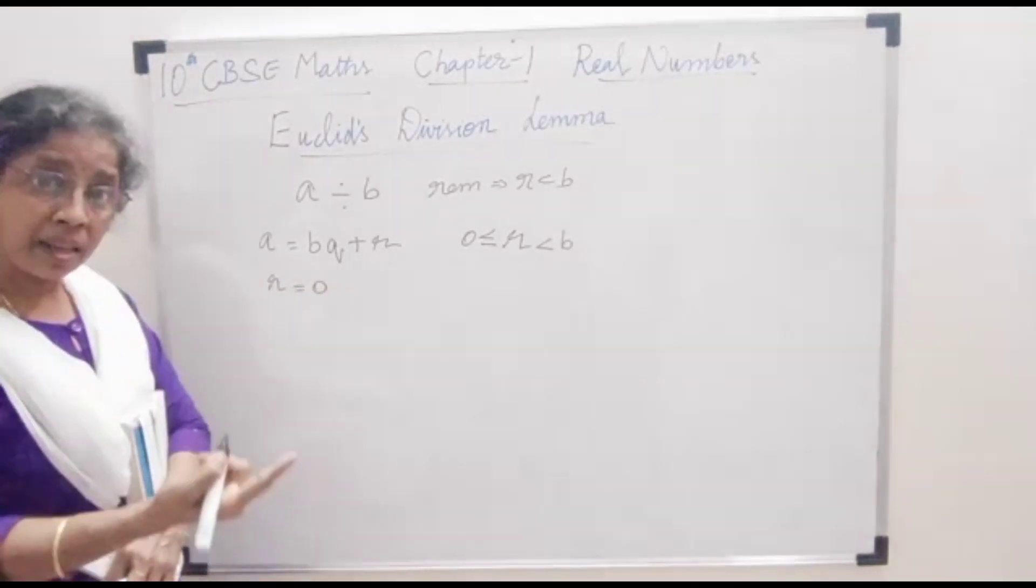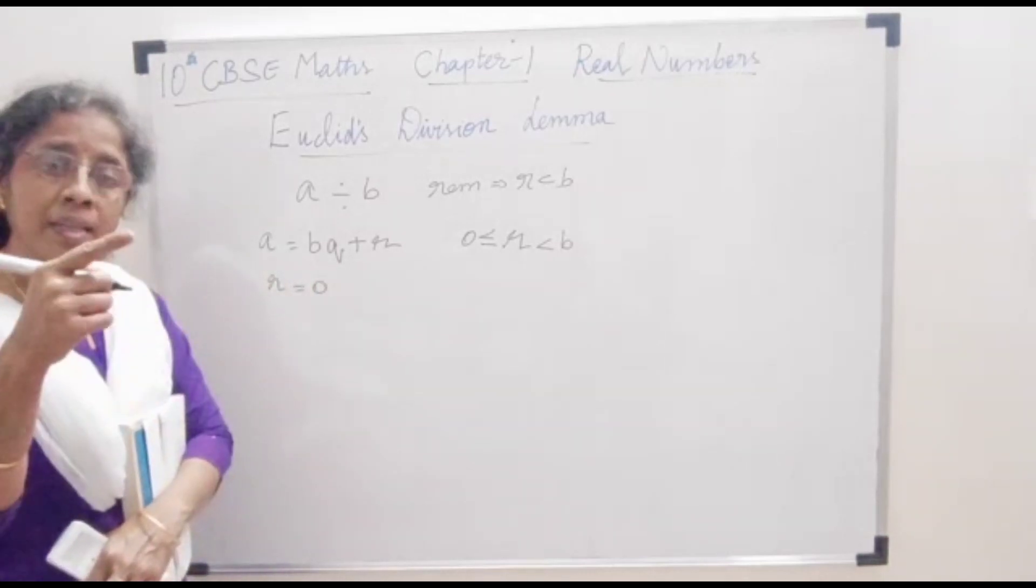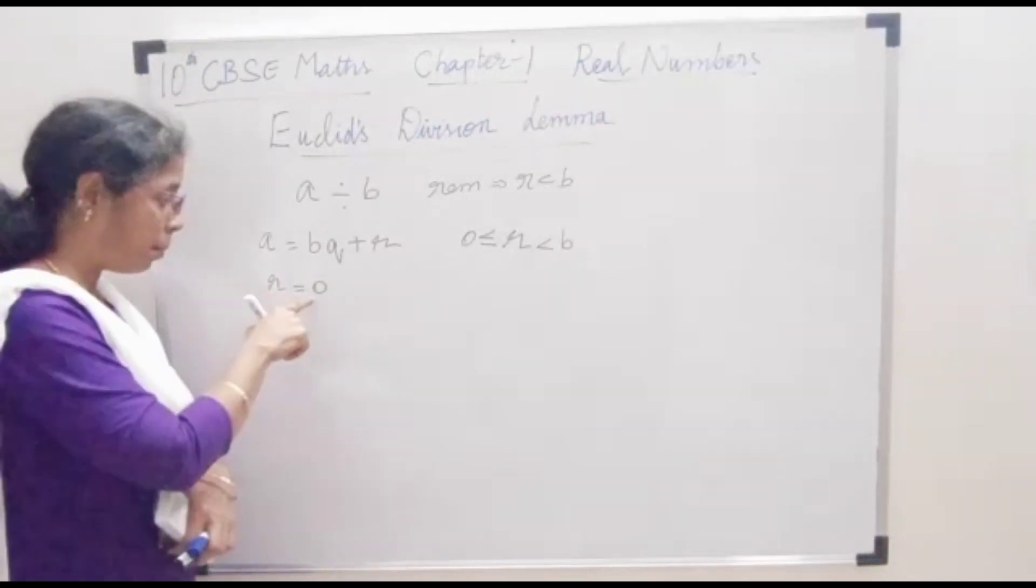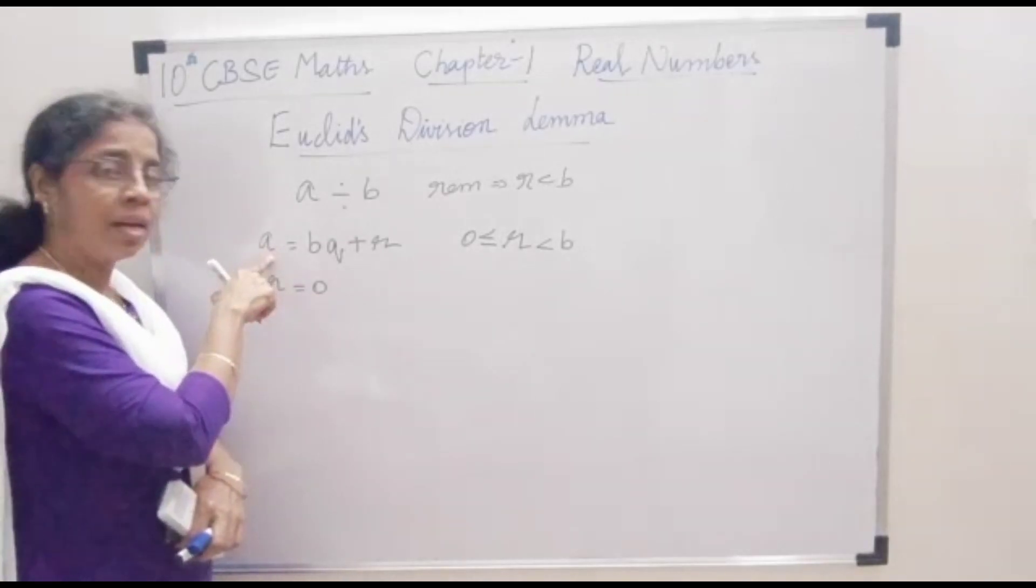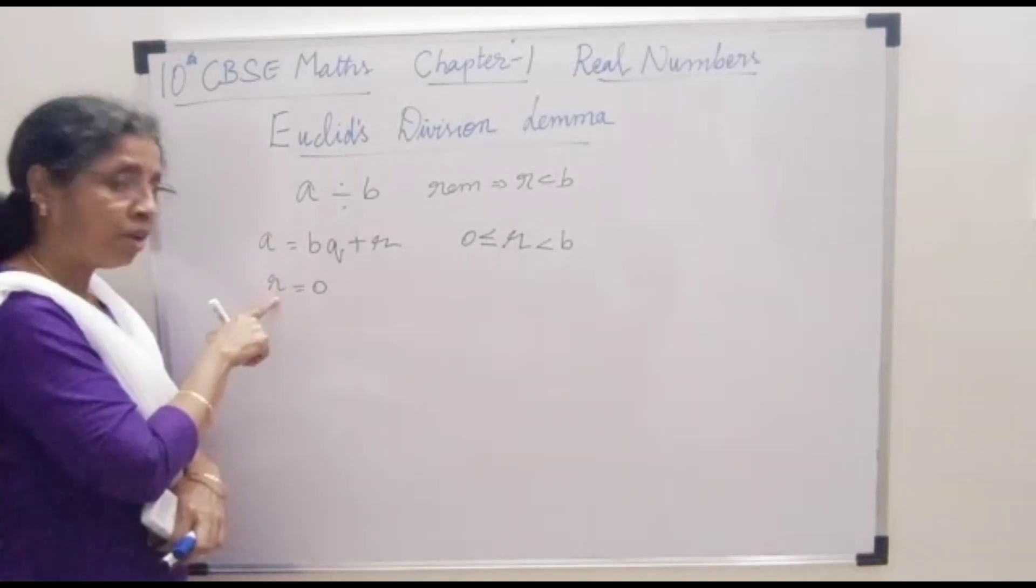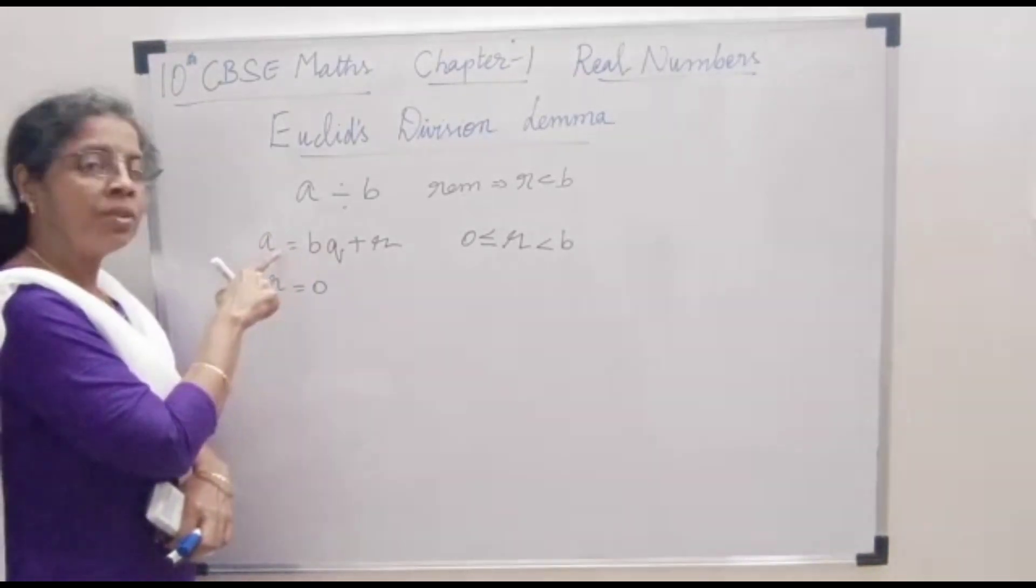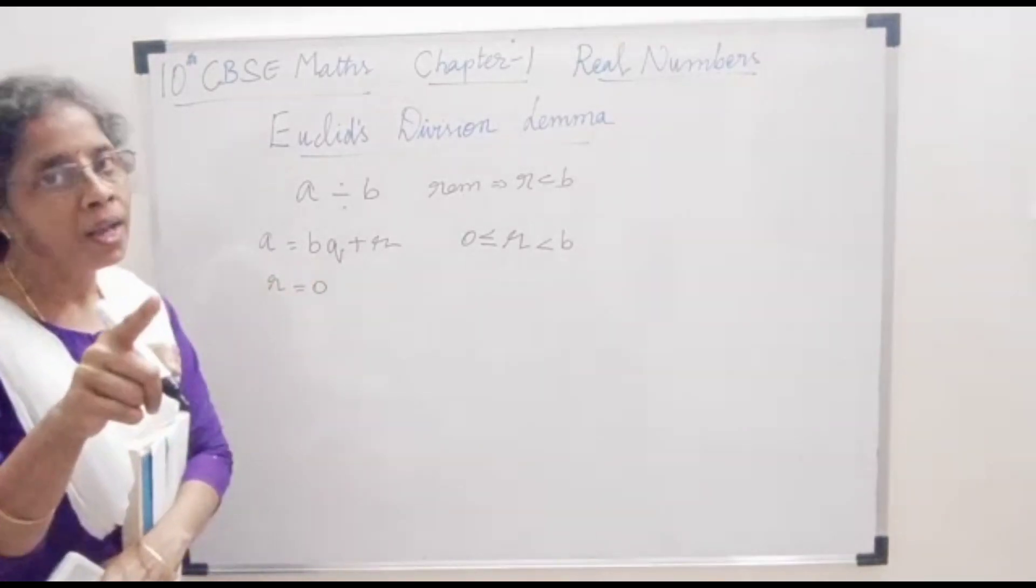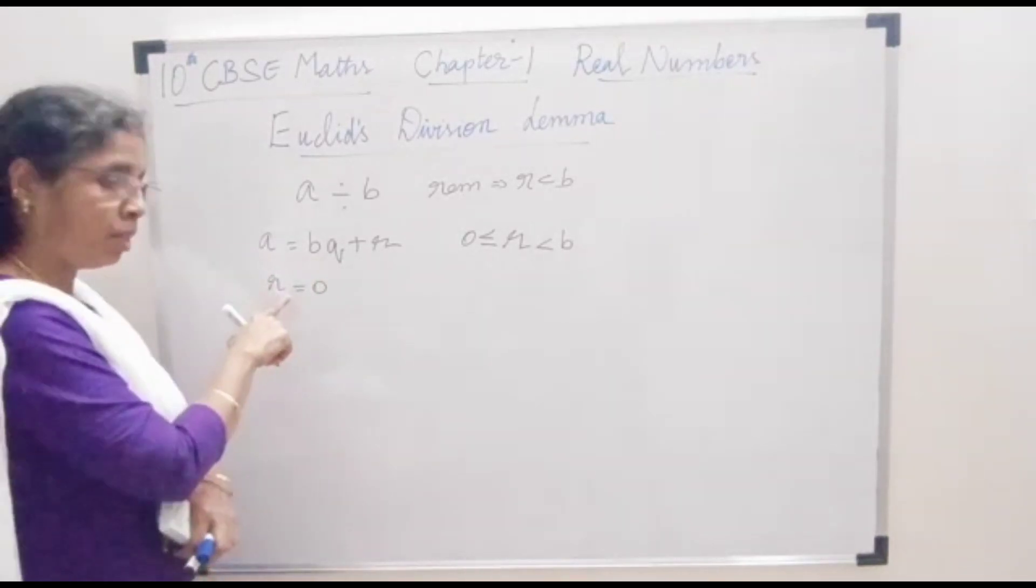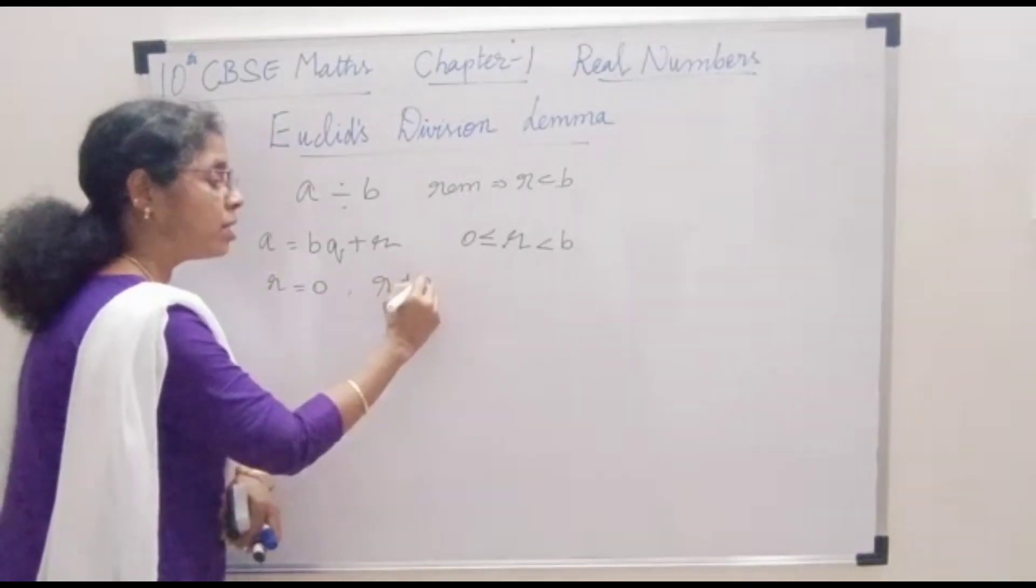B, the divisor which gives the remainder 0 when it divides A, will become the HCF. If the remainder is not equal to 0, the process is different.